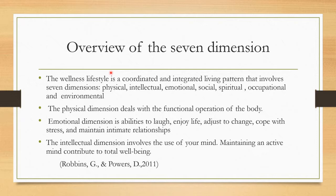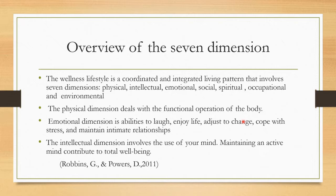Now let's look at the overview of the seven dimensions of wellness. Wellness is a coordinated and integrated living pattern that involves seven dimensions: physical, intellectual, emotional, social, spiritual, occupational, and environmental. The physical dimension concerns the functional operation of the body. The emotional dimension is the ability to love, enjoy, adapt to changes, cope with stress, and maintain intimate relationships. The intellectual dimension involves using your mind and its five senses to stay active and contribute to total well-being.